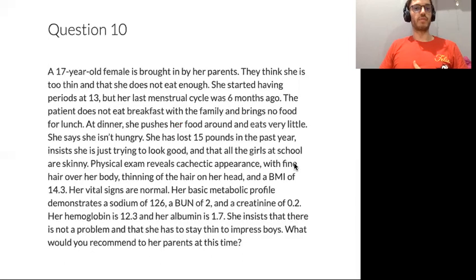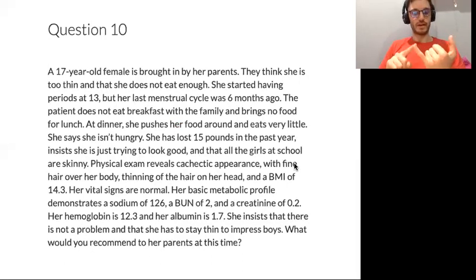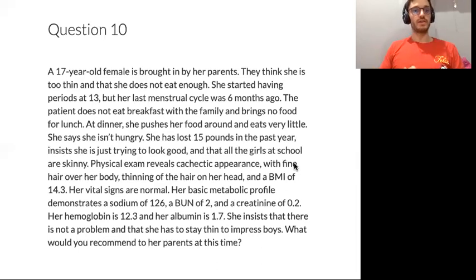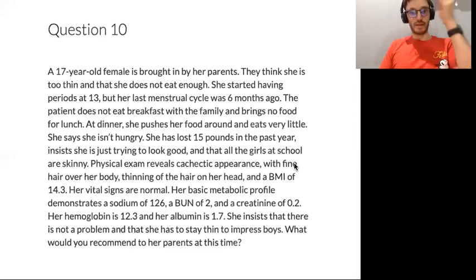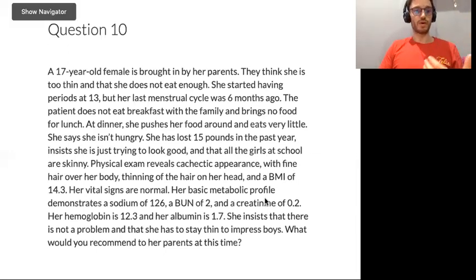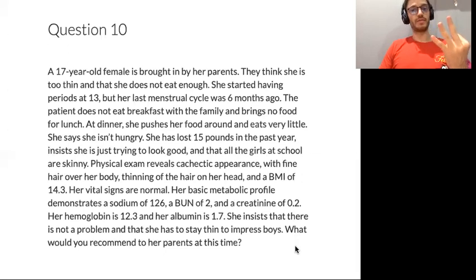Next question. A 17-year-old female brought in by her parents. She lacks insight about her very low weight and BMI of 14.3. She feels fine, says she's trying to look good, and eats very little. She has metabolic derangements, anemia, and low albumin — severe anorexia nervosa. Options for what to recommend to her parents: psychotherapy, venlafaxine, hospitalize the patient, classes on unhealthy living, or reassurance.